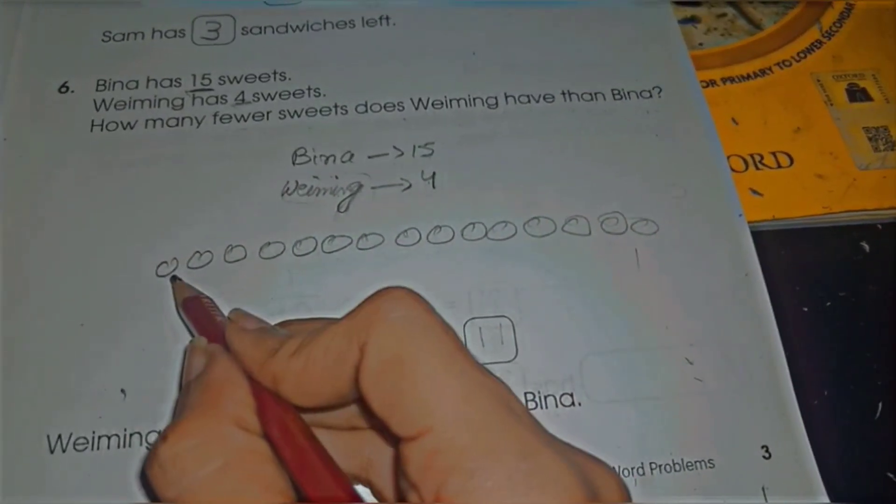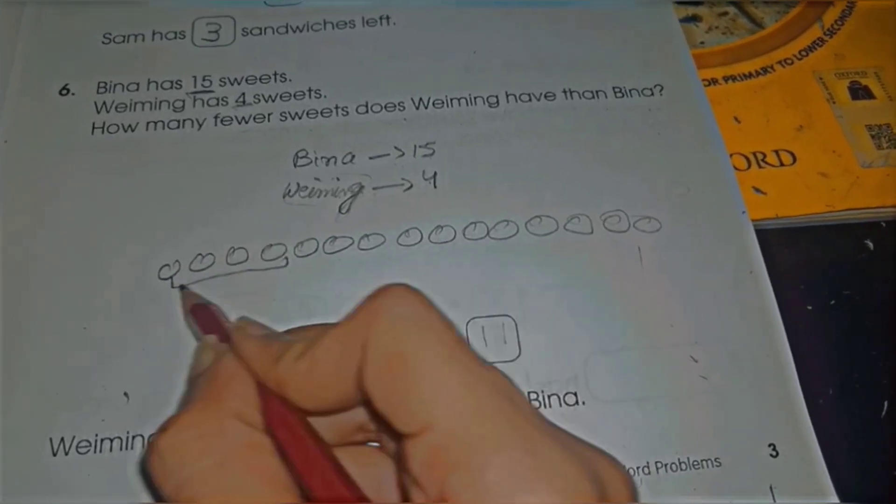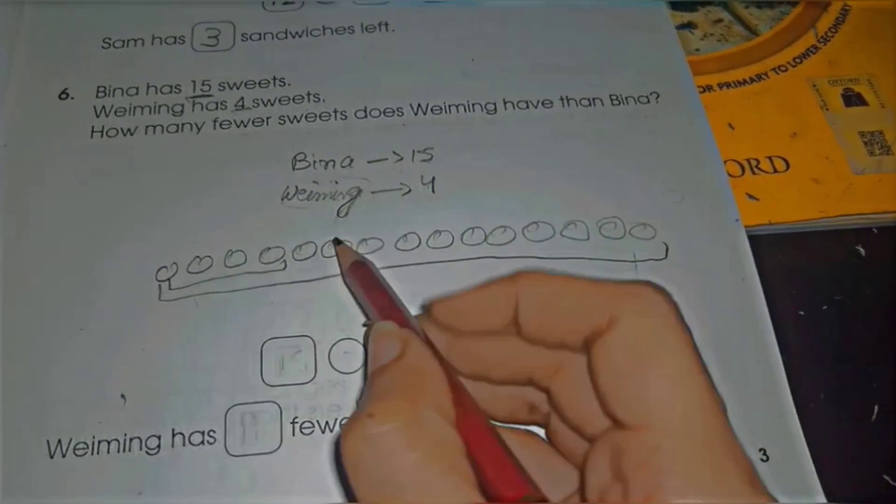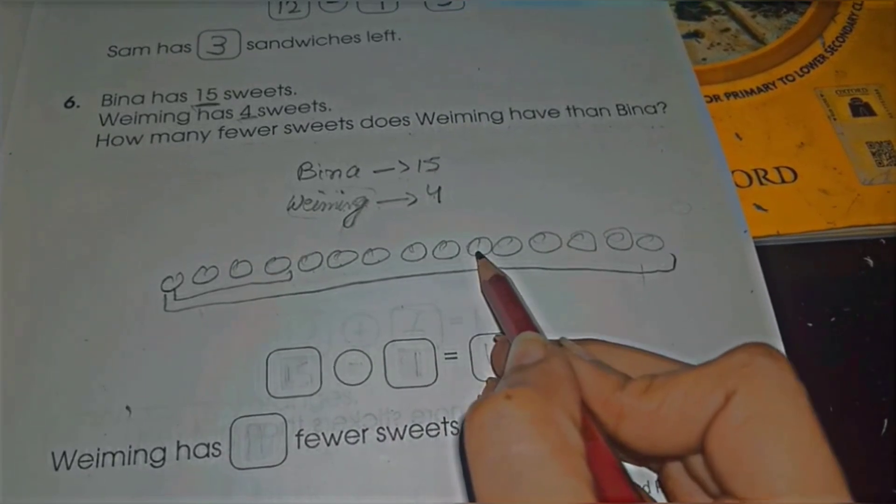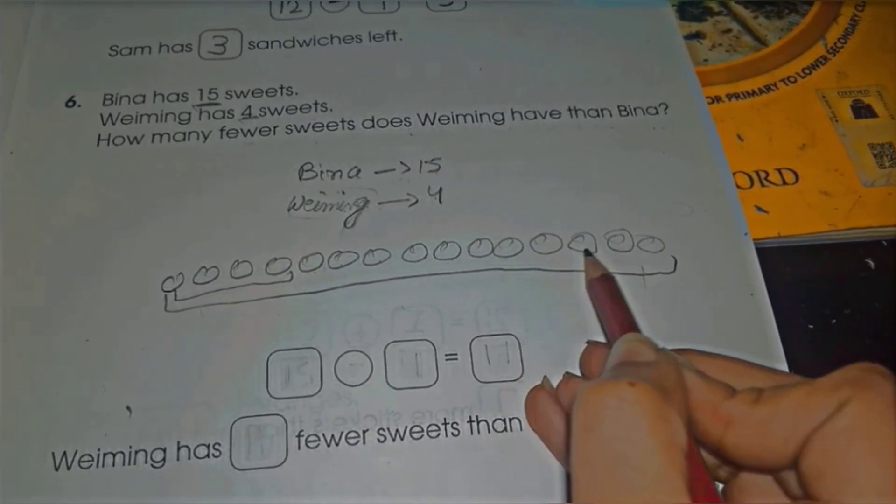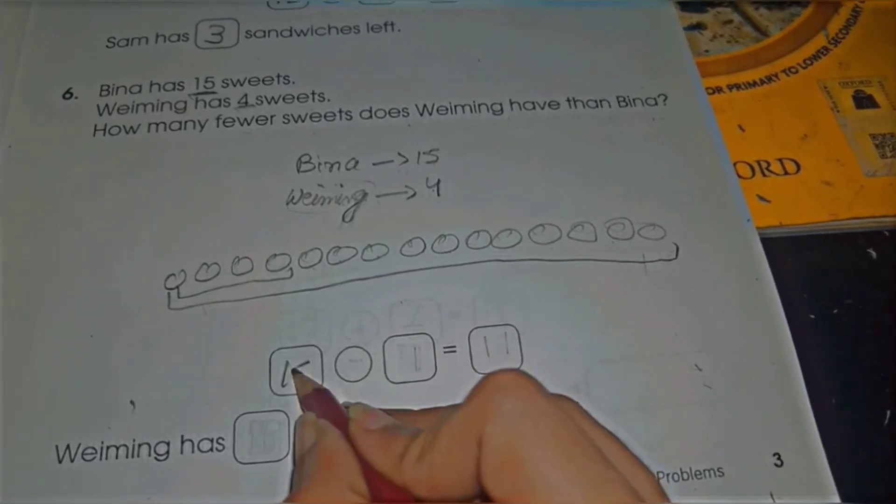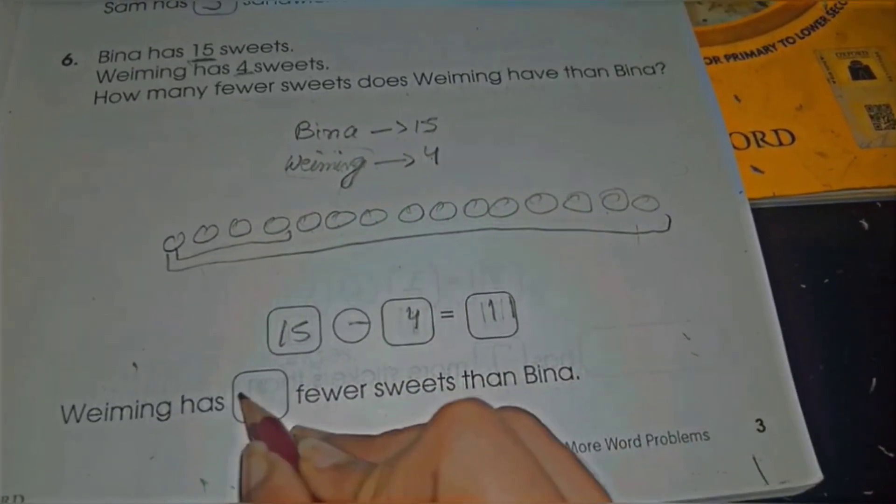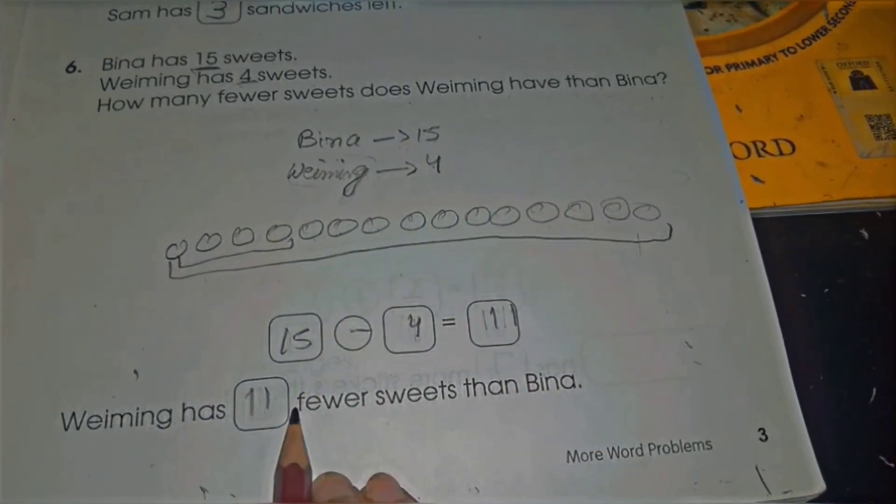So Weiming has 4 sweets and Bina has 15, so it's right. Now how many sweets are left? 1, 2, 3, 4, 5, 6, 7, 8, 9, 10, 11. So 15 minus 4 equals 11. Weiming has 11 fewer sweets than Bina.